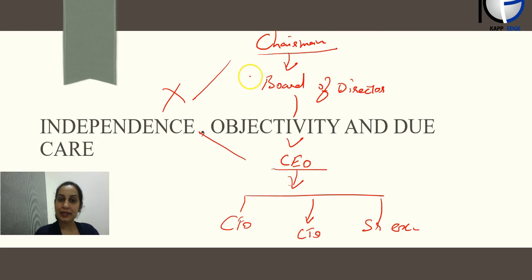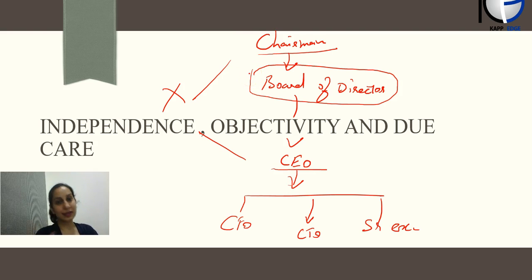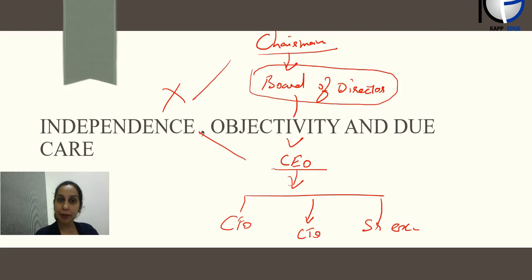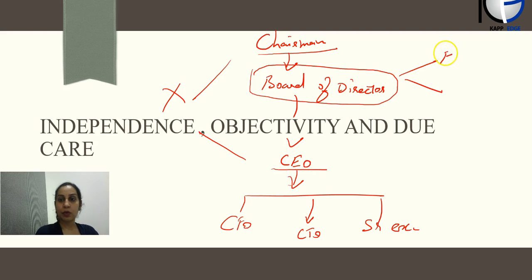Now let's discuss the Board of Directors — this is the layer that actually runs the business. Ideally, auditors are appointed in shareholders' meetings or AGMs. But many times shareholders do not attend AGMs, so end of the day directors are the ones who appoint the auditor, and the auditor reports back to the directors. This raises the question: how will independence and objectivity be maintained? That is where corporate governance recommends two types of directors.